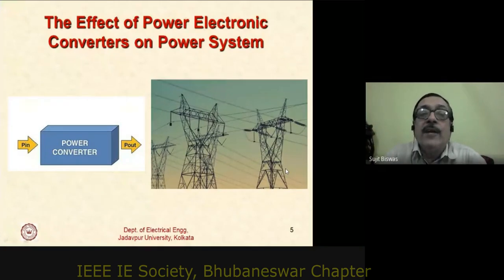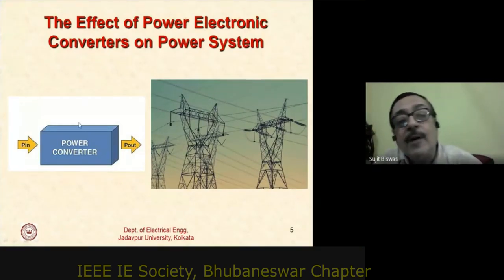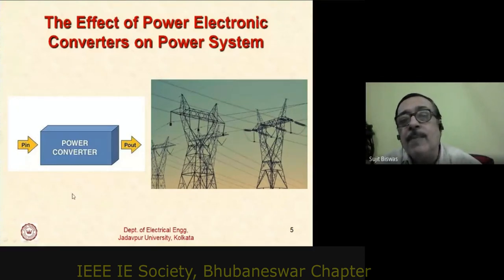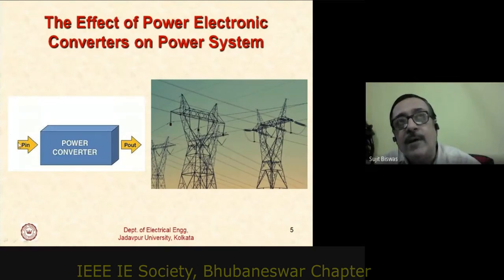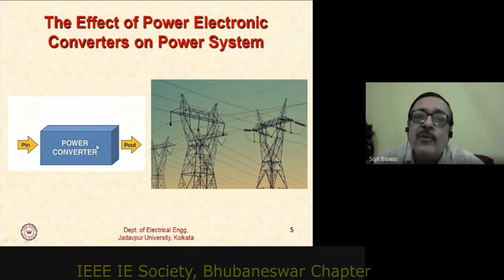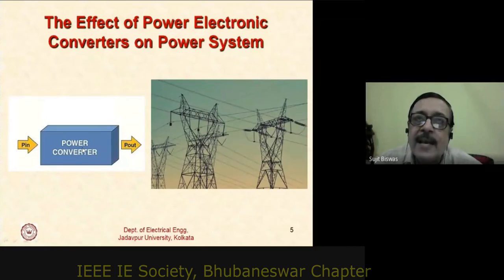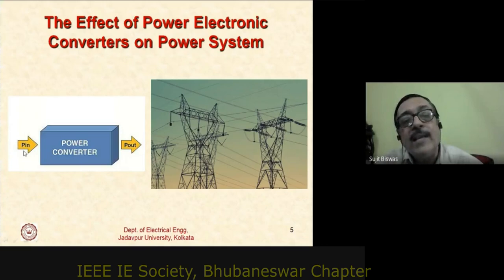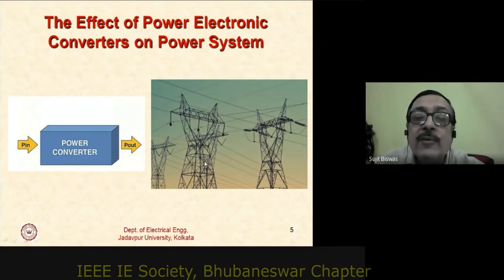The concern is what effect power electronic converters have on the power system. Since a converter converts electrical power from one form to another, at least one end must be connected to the supply grid — either drawing power from the grid or supplying power into it. In some systems, such as transformer testing with phantom loading, both ends may be connected to the grid.